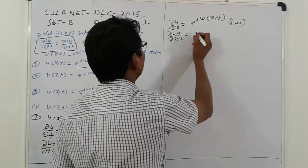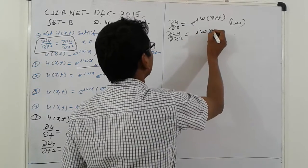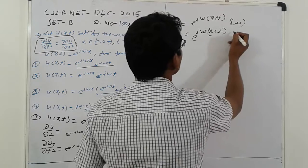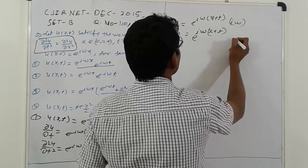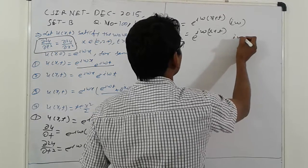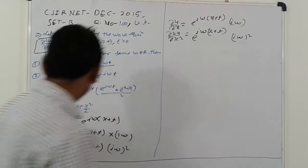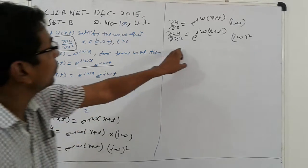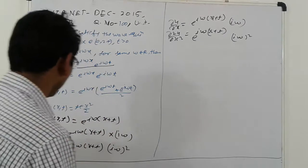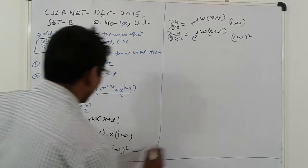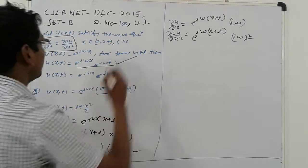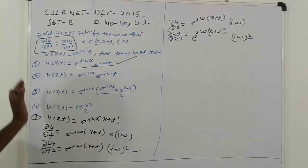Here, ∂²u/∂x² equals e raised to iω(x+t) into (iω)². So ∂²u/∂t² and ∂²u/∂x² are equal — both are the same. That means the first option is correct.